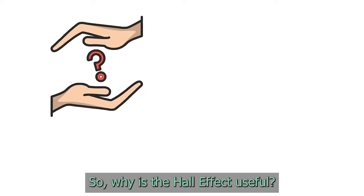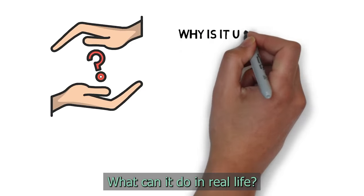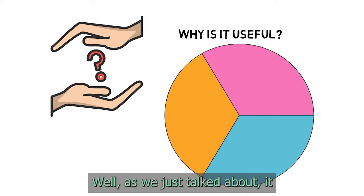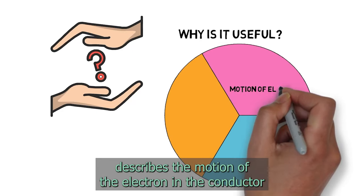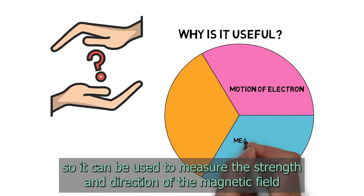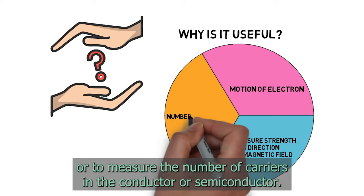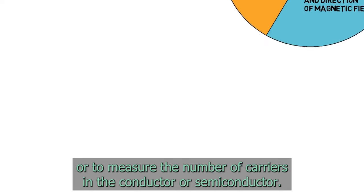So, why is the Hall effect useful? What can it do in real life? Well, as we just talked about, it describes the motion of the electron in the conductor. So it can be used to measure the strength and direction of the magnetic field, or to measure the number of carriers in the conductor or semiconductor.